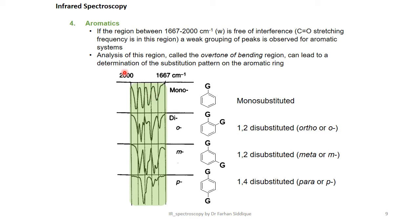In aromatics, if the region between 1667 to 2000 cm⁻¹ is free of interference, then C=O stretching frequency is in the region, a V grouping of peaks is observed for aromatic systems. Analysis of this region can lead to a determination of the substitution pattern on the aromatic ring, like it is shown in mono-substituted, di-substituted ortho, meta and para substituted aromatic rings.